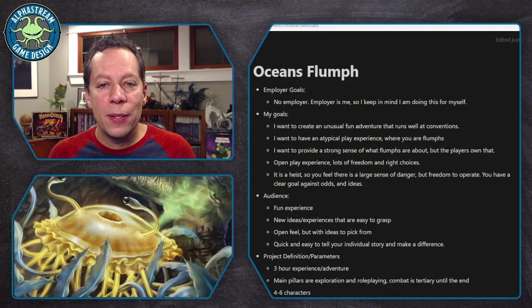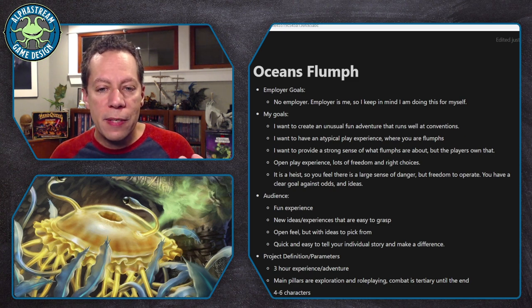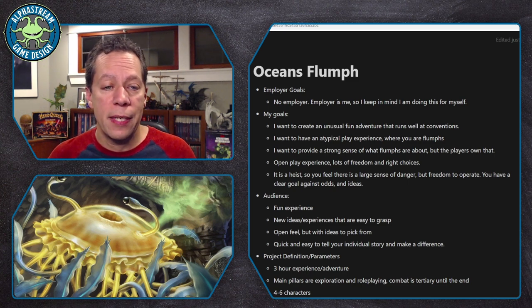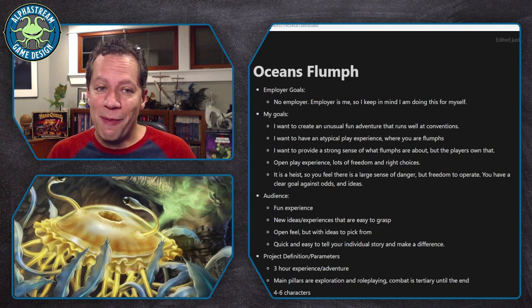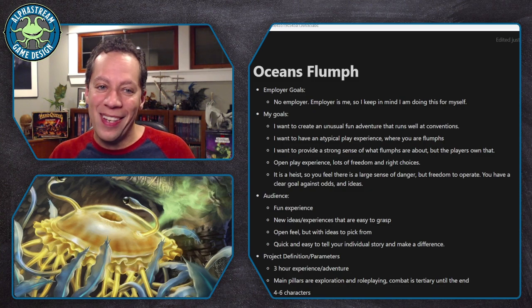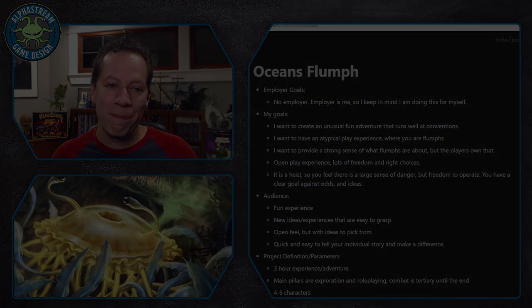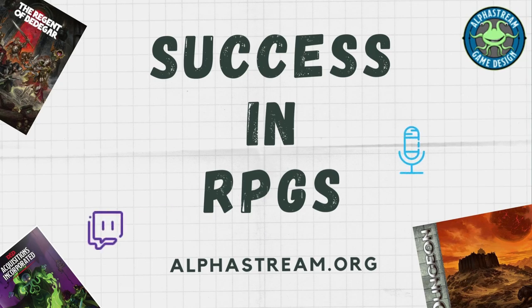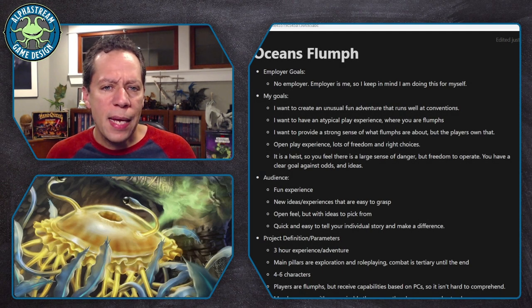In the previous video we looked at how to start a project — how can we look at our goals, how can we look at our audience, and how do we define the project itself so that we have this really good initial setup upon which we're going to build. In this video we're going to look at the very next step: we're going to talk about the premise of our adventure and look at some of the adventure concepts so we really have the beginnings of our outline. We're going to do that right now on Success in RPGs.